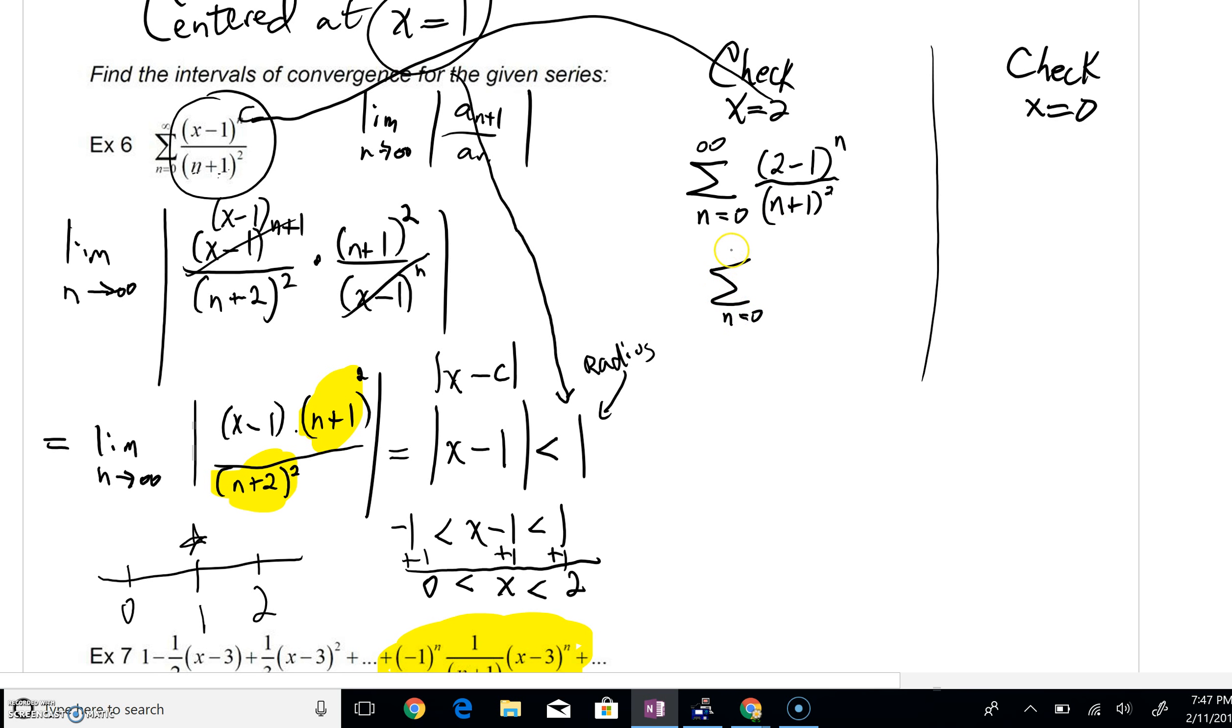And one to the n is just one itself. You just have this thing here. If we were to plug in zero, you can see that we'd get zero minus one to the n. That's negative one to the n over n plus one squared. So we're left with two series that we need to investigate.